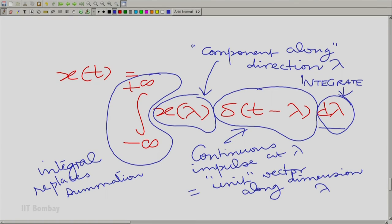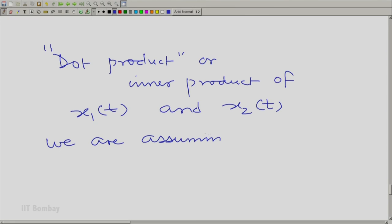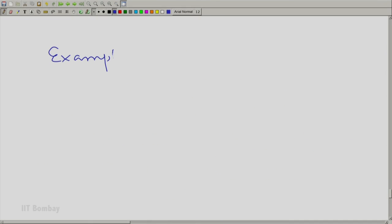Now you can also define a dot product between two signals. We can talk of the dot product or inner product. Let us be formal now. Of let's say x1(t) and x2(t). We are assuming real signals. The dot product or the inner product is essentially the integral of x1(t) times x2(t) over all t, t running from minus to plus infinity. We can take an example. We can find the dot product of these two signals.